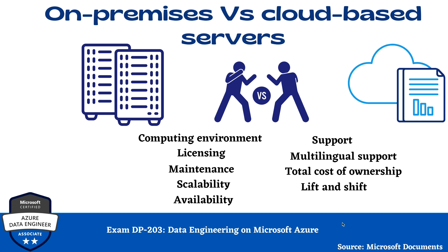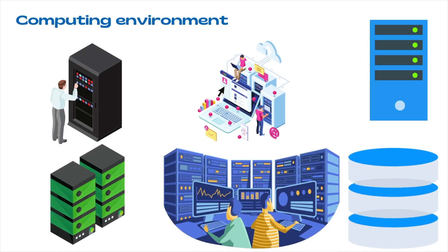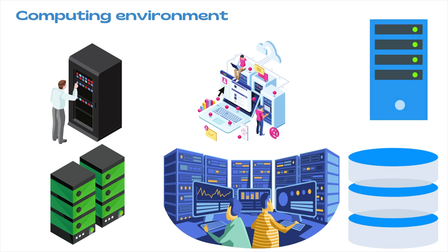In on-premise environments, the first consideration is the computing environment. On-premises environments require physical equipment to execute applications and services. This equipment includes physical servers, network infrastructure and storage. The equipment must have power, cooling and periodic maintenance by qualified professionals. A server needs at least one operating system installed, and might need more than one if the organization uses virtualization technology. Basically, any organization is going to need their own hardware, server, and maintenance team.